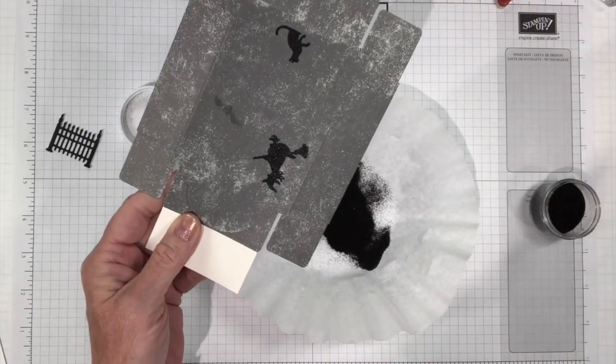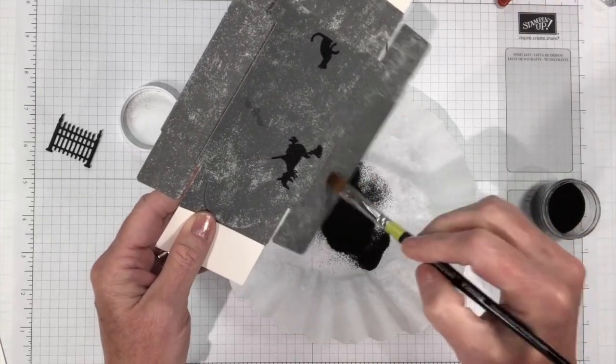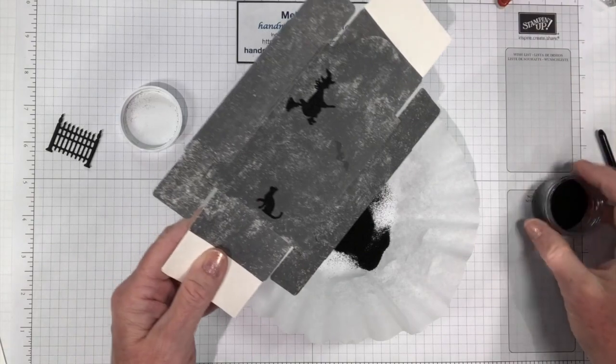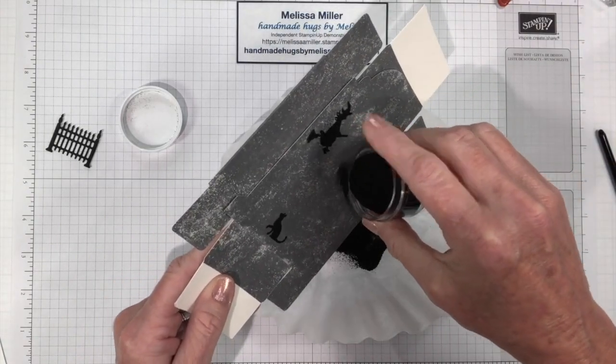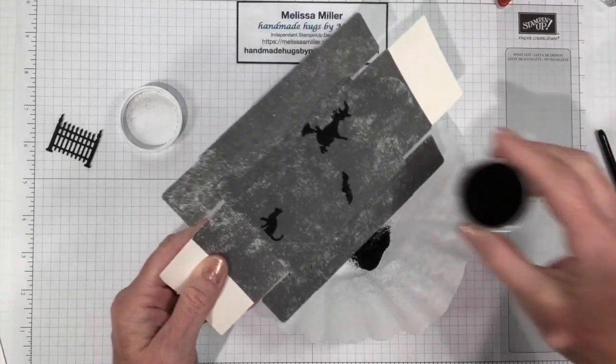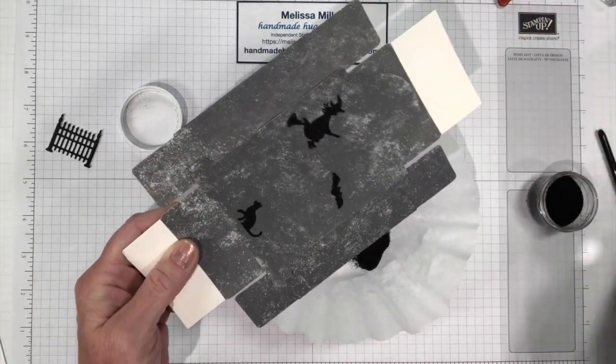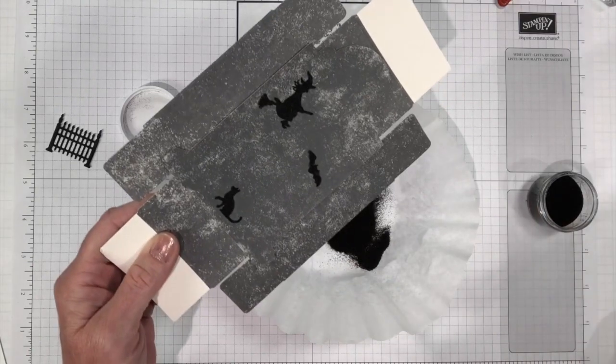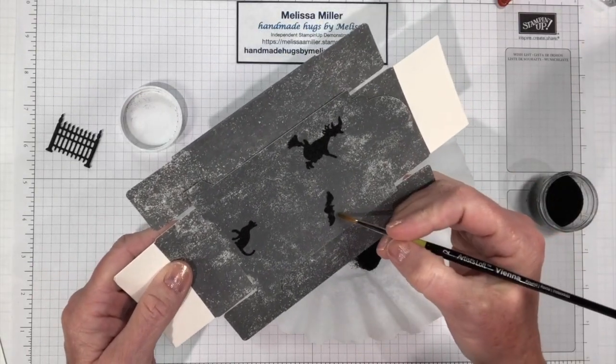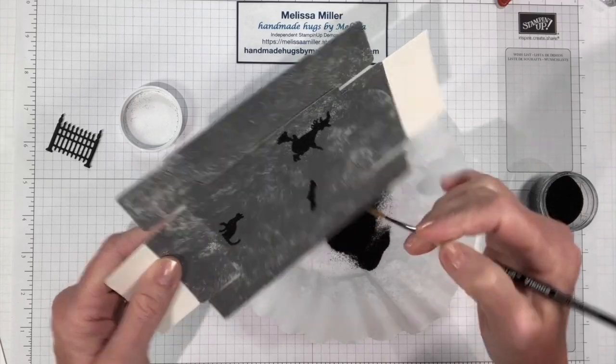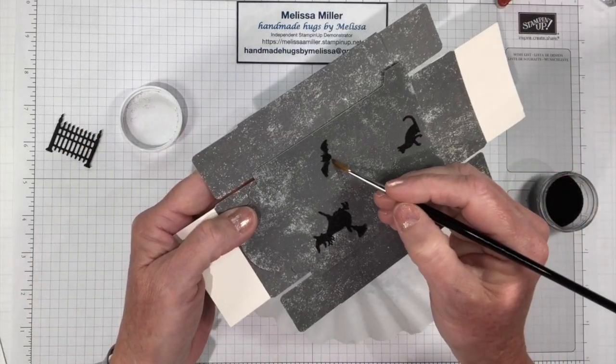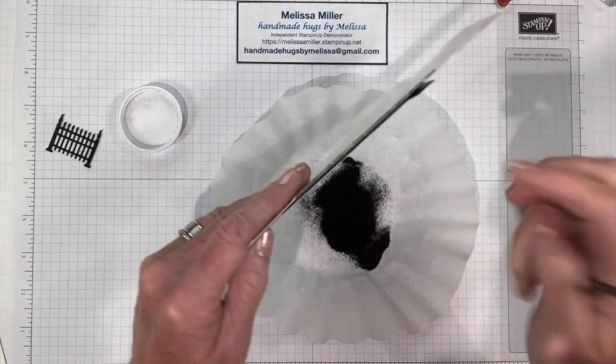Just kind of tap off the excess. If you do get a little bit on there you can always take a paint brush and just wipe it off if it ends up where you don't want it. But that's why we use the embossing buddy so it doesn't stick where we don't want it. All right. There's our bat.